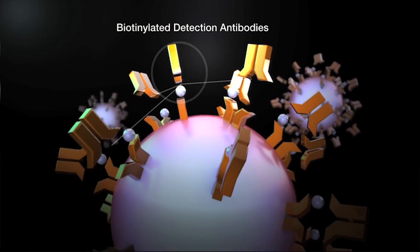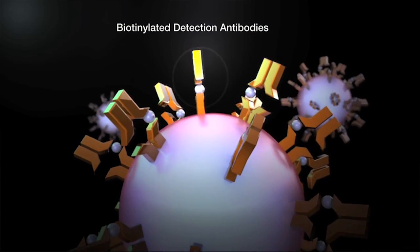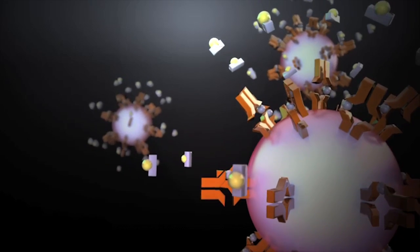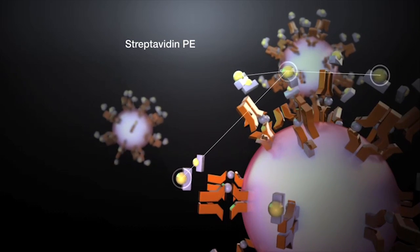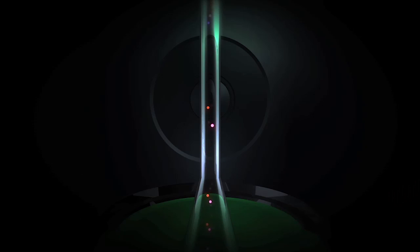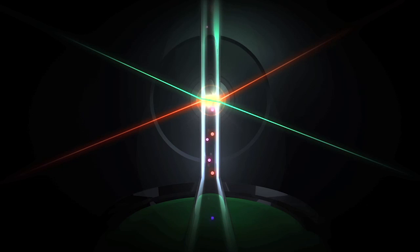Biotinylated detection antibodies are added to quantify analytes, allowing instruments to measure fluorescence of biotin-bound streptavidin-phycoerythrin conjugates. Lasers read the color code of each bead and its bound analytes, providing quantitative data on multiple biomolecules from one sample. This is the power of multiplexing.